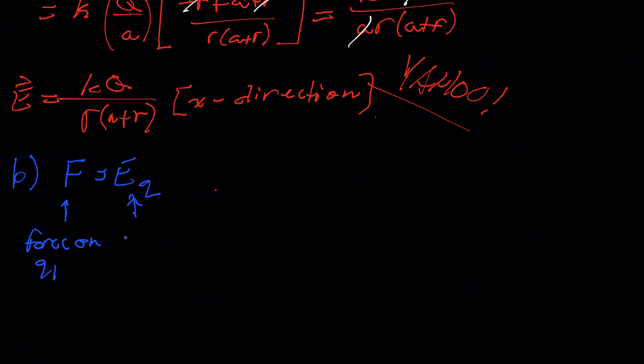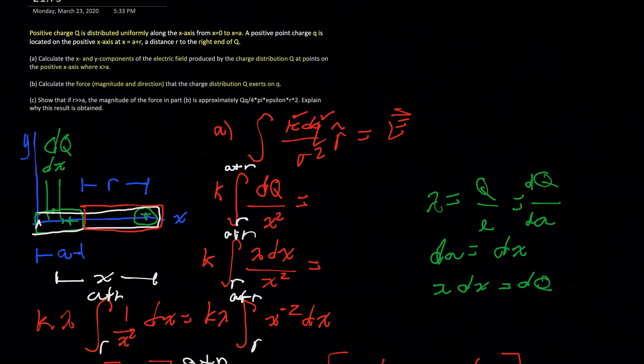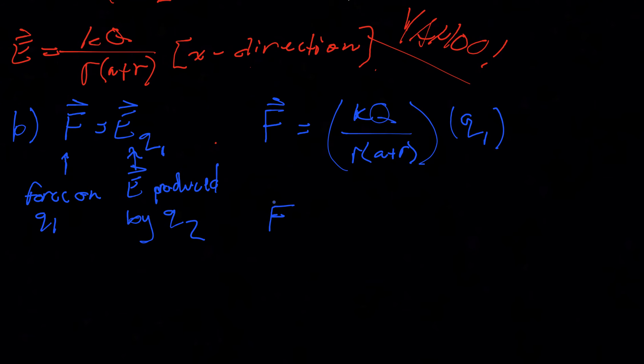So keeping that in mind, we can write the force as this guy, which we got the answer from already, kq over r a plus r, and then times, and then this is going to be the small q, because it's the force that the particle is acting on, which is the green charge particle in this case, point charge in this case. And so then we can write that f is equal to k q over r a plus r and then small q.